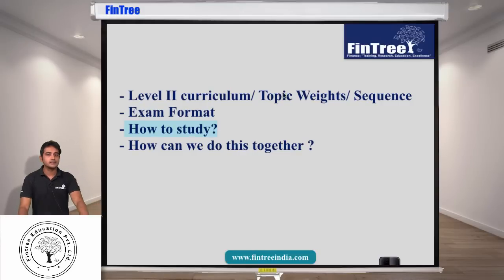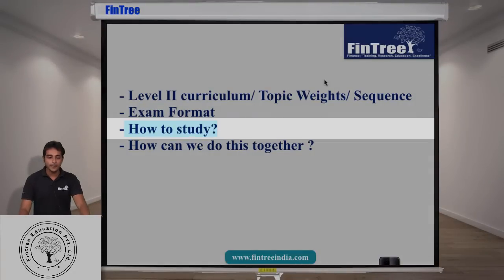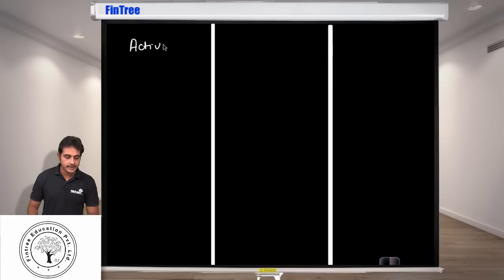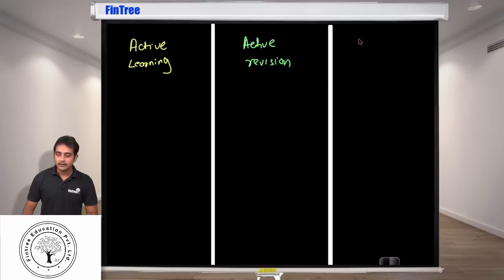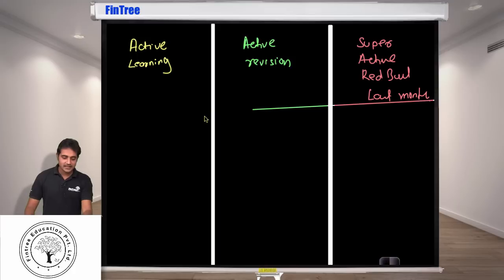Now we will discuss how to study. I'm going to break this part into three sections: first is your active learning, second would be your active revision, and third would be your super active red bull based last month. So first step of your preparation which is learning.